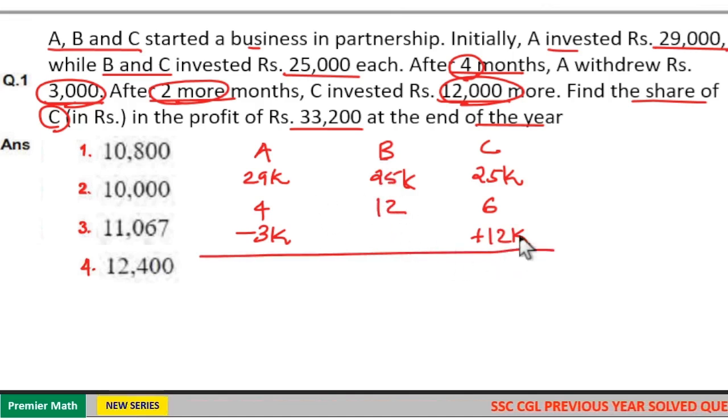When you take the ratio of A, B and C's investment this 1000 will cancel each other. So remaining is here A invested 29,000 for 4 months means A invested 29 into 4 plus after 4 months A withdrew Rs. 3,000 means remaining is 29 minus 3, 26,000.